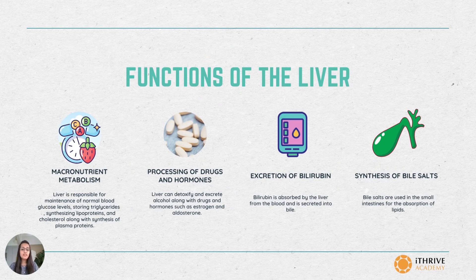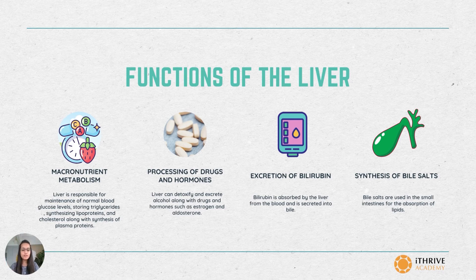The different functions associated with the liver — first, it helps in macronutrient metabolism. The liver is especially important in maintaining a normal blood glucose level. When glucose level is low, the liver can break down stored glucose, that is glycogen, to glucose and release it into the bloodstream. That is carbohydrate metabolism.